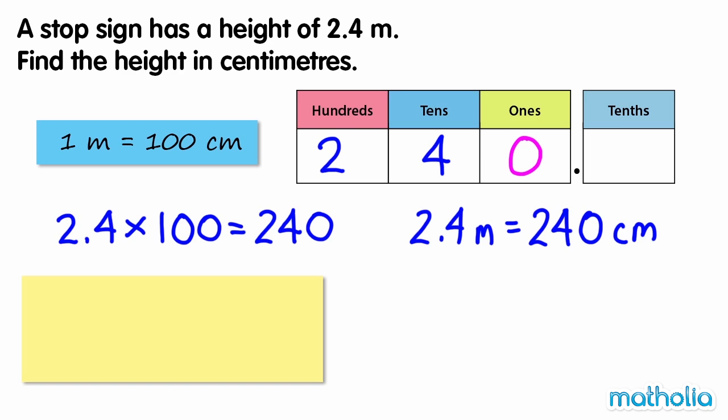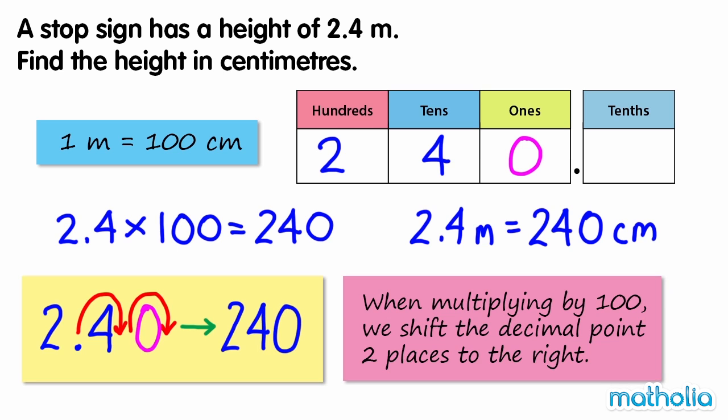Another way we can multiply by 100 is to shift the decimal point. Shifting the decimal point two places to the right also gives 240. When multiplying by 100, we shift the decimal point two places to the right.